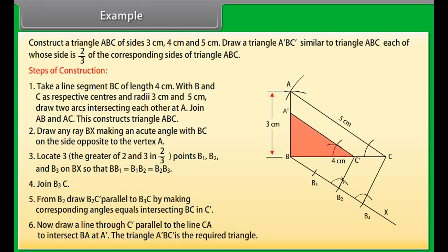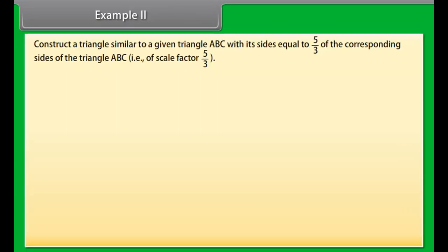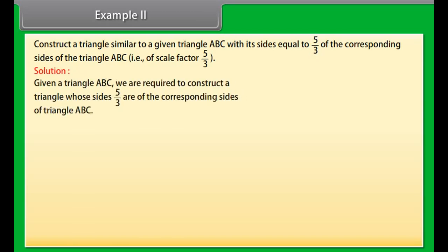From B2, draw B2C' parallel to B3C by making corresponding angles equal intersecting BC in C'. Now draw a line through C' parallel to the line CA to intersect BA at A'. The triangle A'BC' is the required triangle.